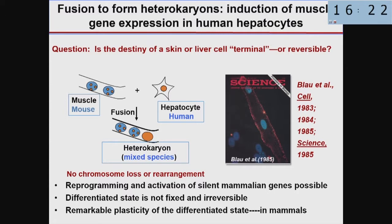I came into this field wanting to know about other cell types and how plastic they are — could they be induced to change and form new kinds of cell types? The question I asked is: is the destiny of a skin or a liver cell terminal, or is it reversible? The dogma in the 80s was that if you were a liver cell or a skin cell, that was your destiny. So I devised a cell fusion system called a heterocaryon, where we fused multiple muscle cells from mouse with human liver cells to form this mixed-species, non-dividing syncytial cell.